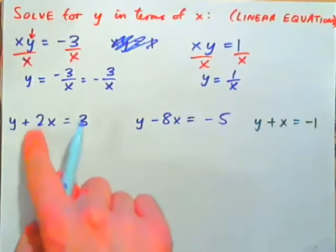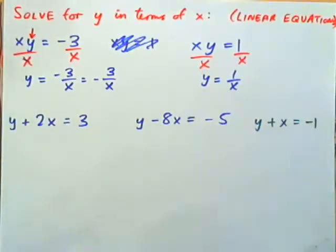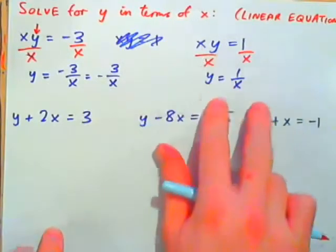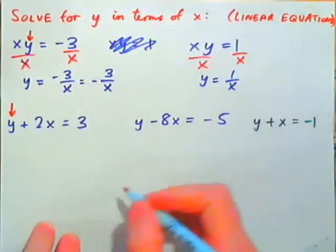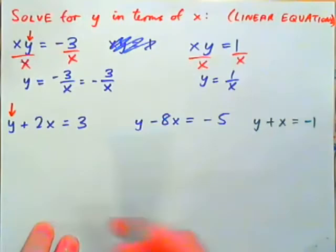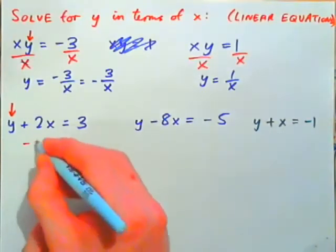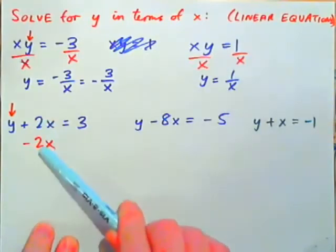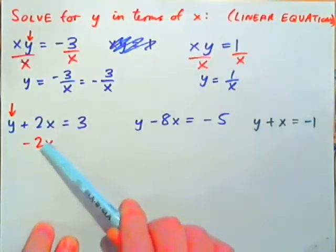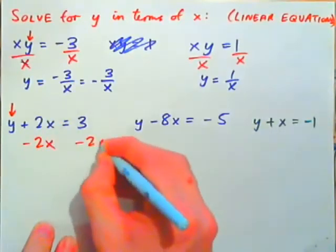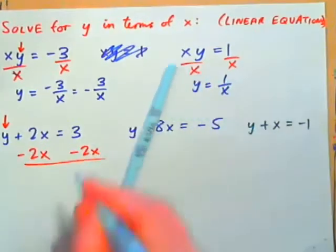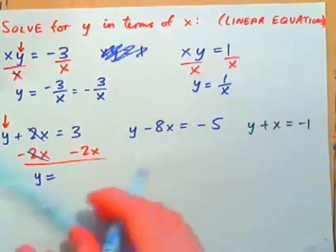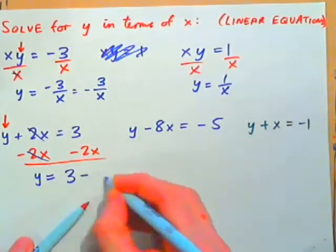Now this one: Y plus 2X equals 3. We want to solve for Y in terms of X — get Y alone. 2X has been added, so to undo adding 2X, subtract 2X from both sides. 2X minus 2X makes 0, and we're left with Y equals 3 minus 2X.